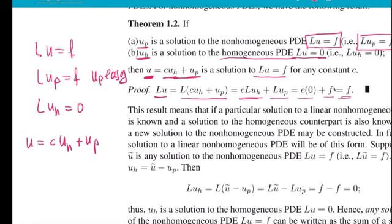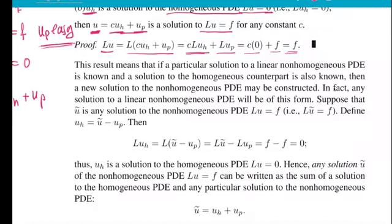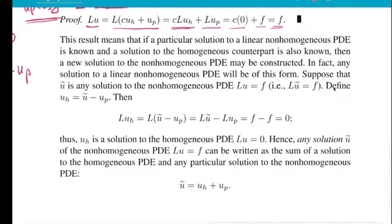So mathematically, I think this works just fine. The meaning, though, will maybe only become clear later, in particular this part here. What do I mean by Up easy? So we have to do examples, which we do in class, where we see that we can get away often with a very easy function for Up, where then Uh may be not so easy.